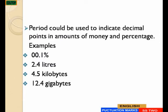A period can be used to indicate decimal points in amounts of money and percentage. Examples: 0.1%, 2.4 liters, 4.5 kilobytes, 12.4 gigabytes. These are amounts or percentages of substances.